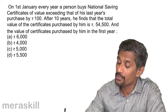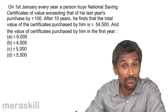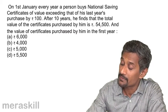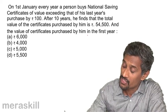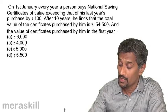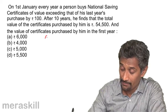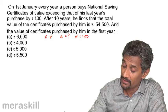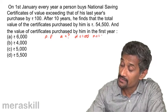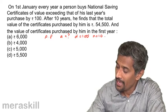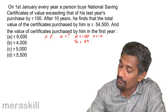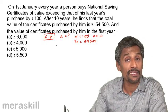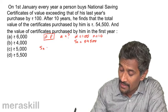Final problem: on 1st January every year, a person buys National Savings Certificates of value exceeding the previous year's purchase by ₹100. After 10 years the total value of all certificates purchased is ₹54,500. Find the value of certificates purchased in the first year. This is an AP with d = 100, n = 10, and S₁₀ = 54,500.